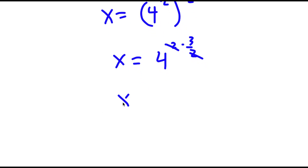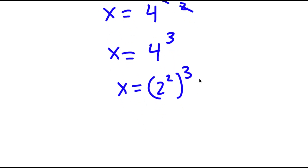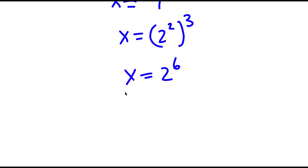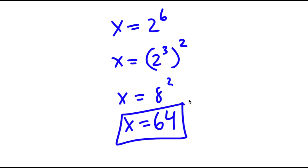So now I have x is equal to 4 to the power of 3. Now 4 is the same thing as 2 squared. So now I have x is equal to 2 squared to the power of 3. 2 times 3 is 6, so I have x is equal to 2 to the power of 6. And this is the same thing as 2 to the power of 3 squared — 2 to the power of 3 is 8, so now I have 8 squared, which is equal to 64. So x is equal to 64.